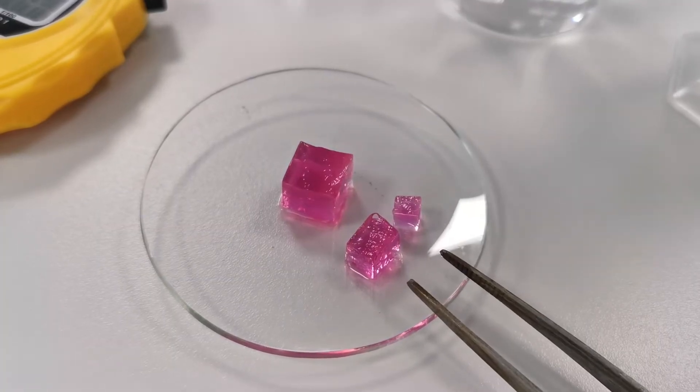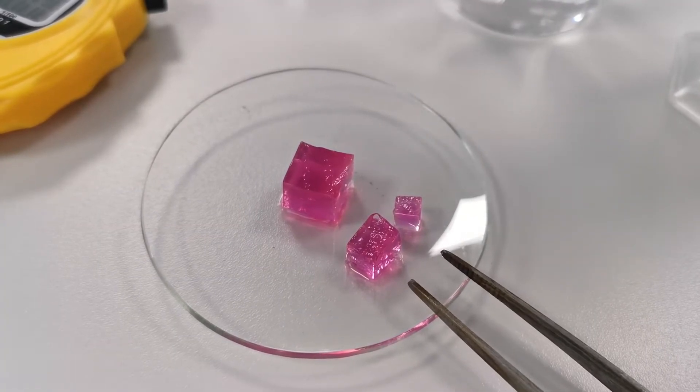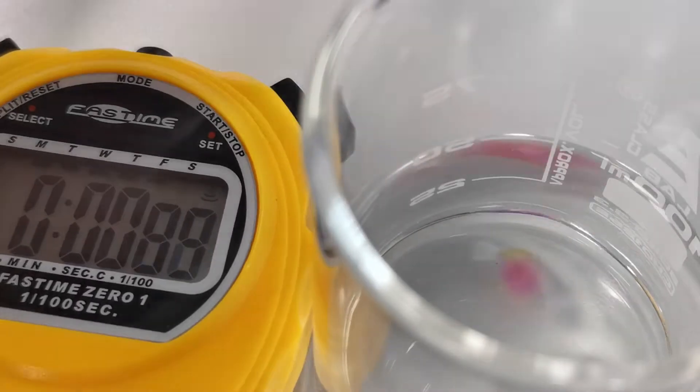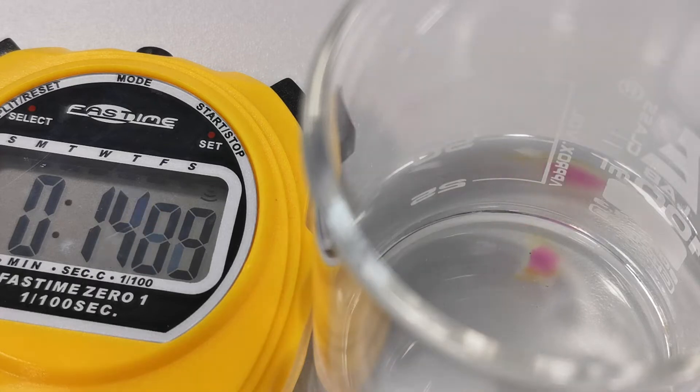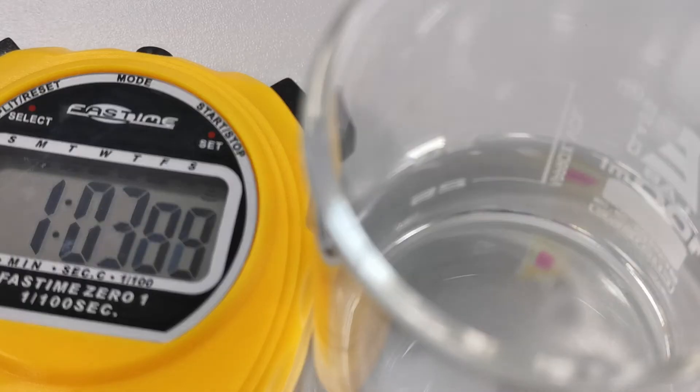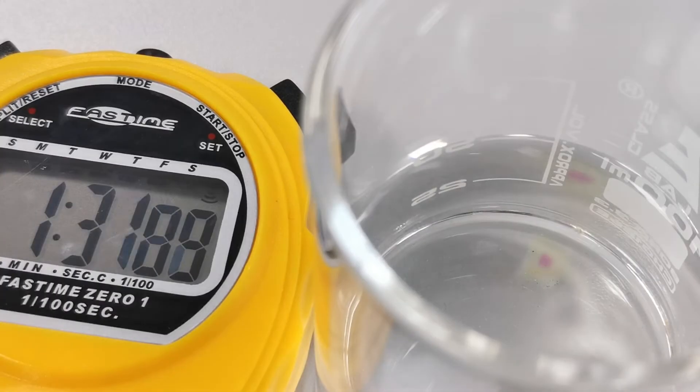Now let's start with the smallest agar cube. The height, width, and length are all 0.5 cm. Let's carefully place this into the beaker of hydrochloric acid and start the stopwatch. Now observe closely as the hydrochloric acid will begin to diffuse into the agar cube reacting with the phenolphthalein indicator. We will stop the stopwatch when all of the cube is colourless.